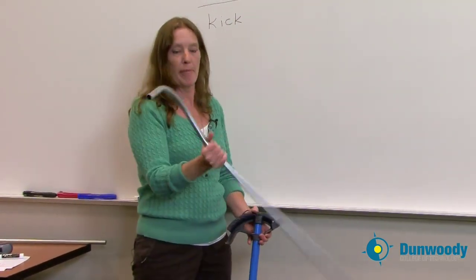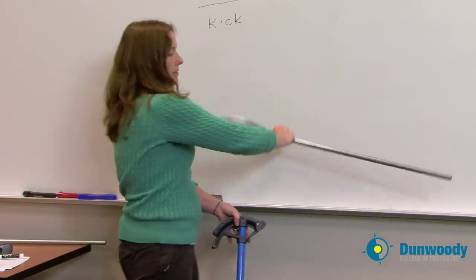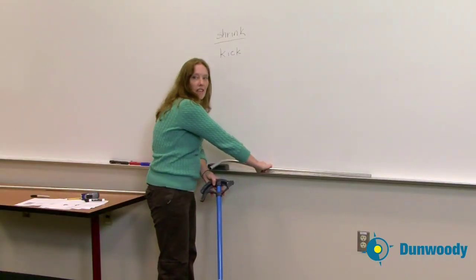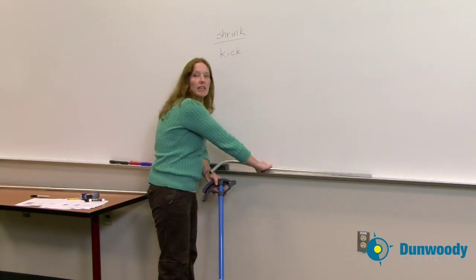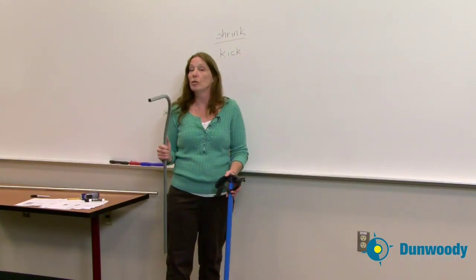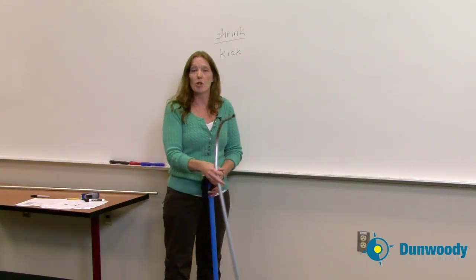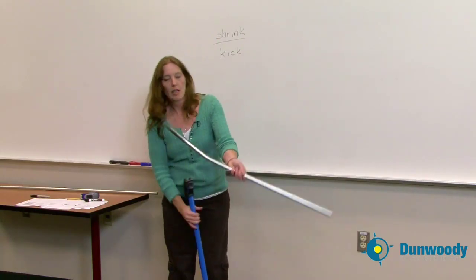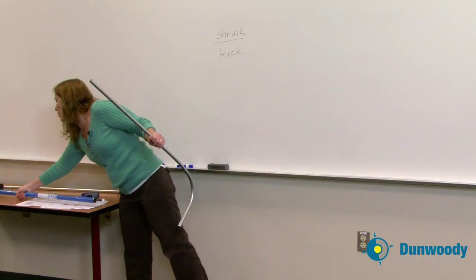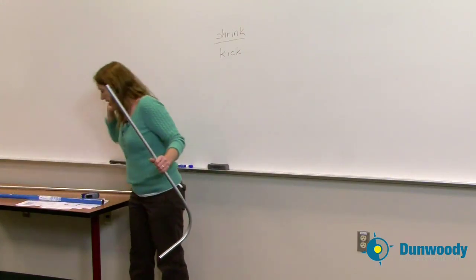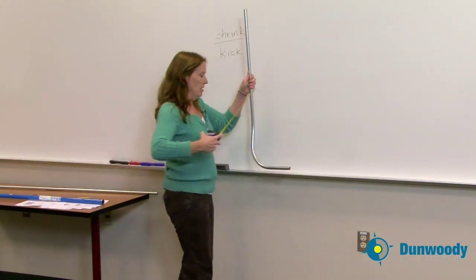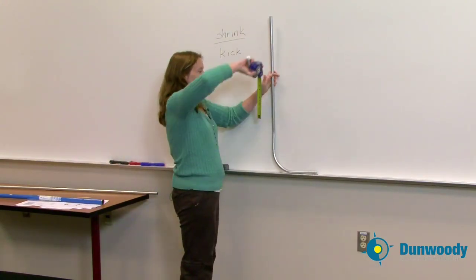So if I look at my pipe now, and I want to put it into a box, I have now changed that height that's needed. That's what we call a kick. And with every kick, I'm going to lose a certain amount of pipe called shrink. So when I measure this, if I remember correctly, we had 34 and a half inches left. So if I measure it now with the kick, I'm going to see a slight difference in that length.